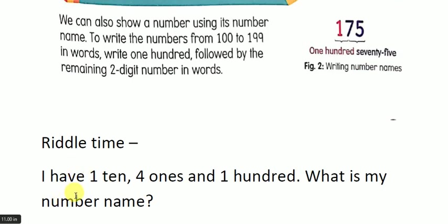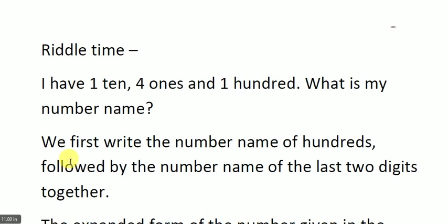Now it is riddle time. Just listen to the question: I have one ten, four ones, and one hundred. Hundreds, tens, and ones are given. What is my number name? We have to guess the number name, seeing the number of hundreds, tens, and ones. As I told you, we first have to write the number name of hundreds — see how many hundreds it has. It has only 100. So first write the number of hundreds followed by the number name of the last two digits — the last two digits will be tens and ones.